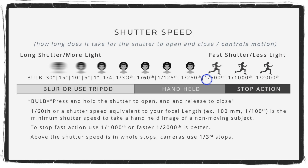Shutter speed is simple: there's a mechanical shutter that opens and closes. If it stays open for a long time, it lets a lot of light in; for a short time, it lets a little light in. The faster your shutter speed, the faster you can stop action. Bulb mode means the shutter stays open while you hold the button and closes when you release it. Most digital cameras go from 30 seconds down to 1/4000th or 1/8000th of a second.